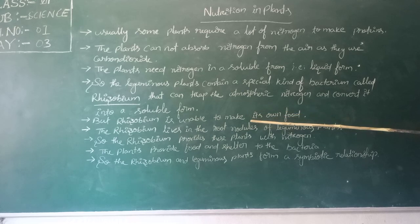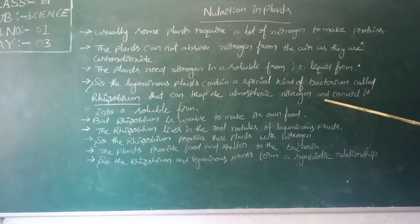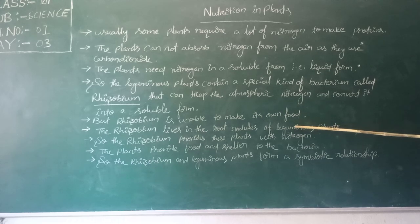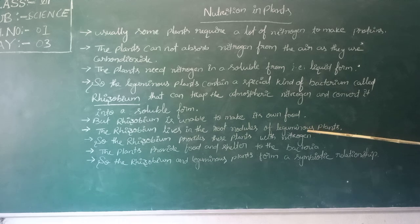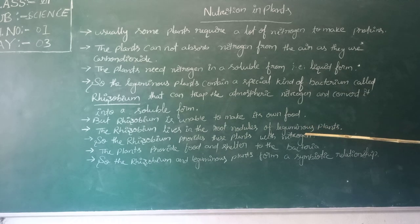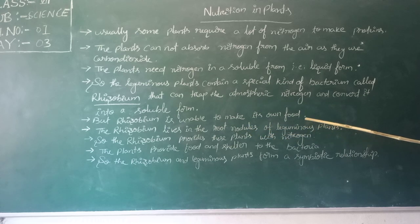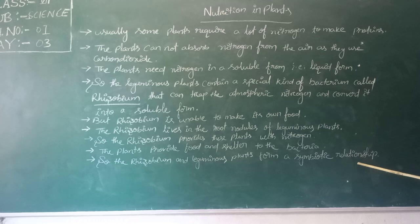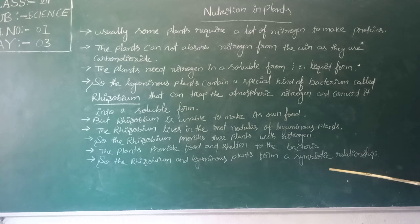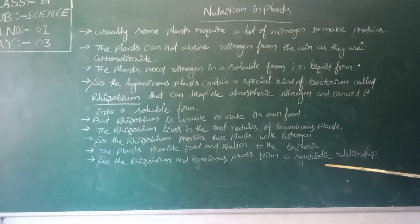Rhizobium converts atmospheric nitrogen into soluble form for use by the plant, but Rhizobium cannot make its own food. So the leguminous plants provide food and shelter to Rhizobium, and Rhizobium provides nitrogen to the plant. Rhizobium are located in the root nodules of leguminous plants, and they perform a symbiotic relationship — where two organisms provide food and shelter to each other.